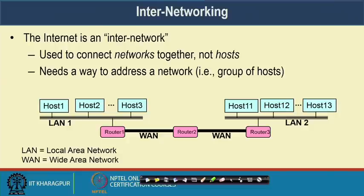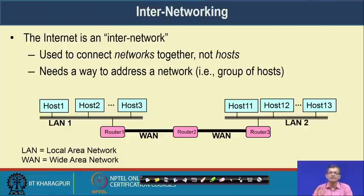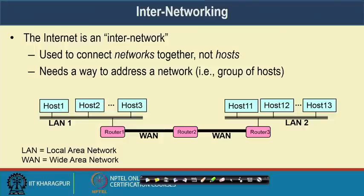In internetworking, we connect networks together. We need a way to address a network or group of hosts. For example, IIT Kharagpur as a network may have different sub-networks: the Centre for Educational Technology, Computer Science Engineering, and the Administration can each be a separate network.